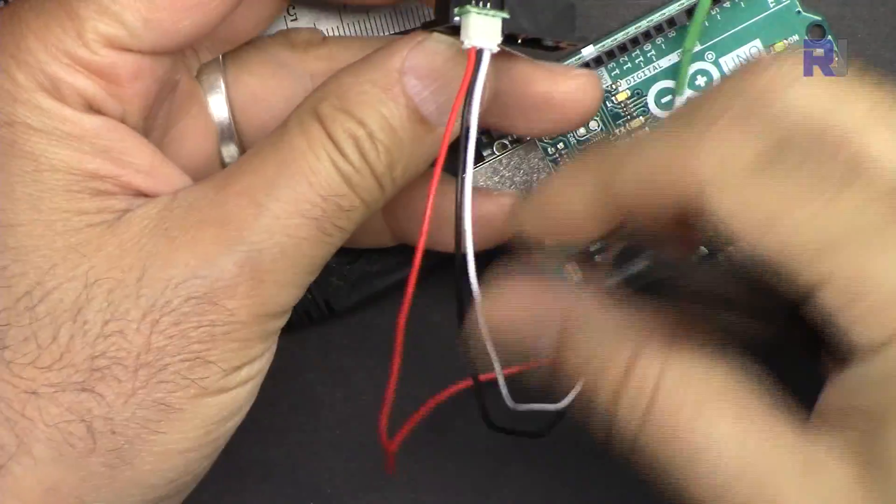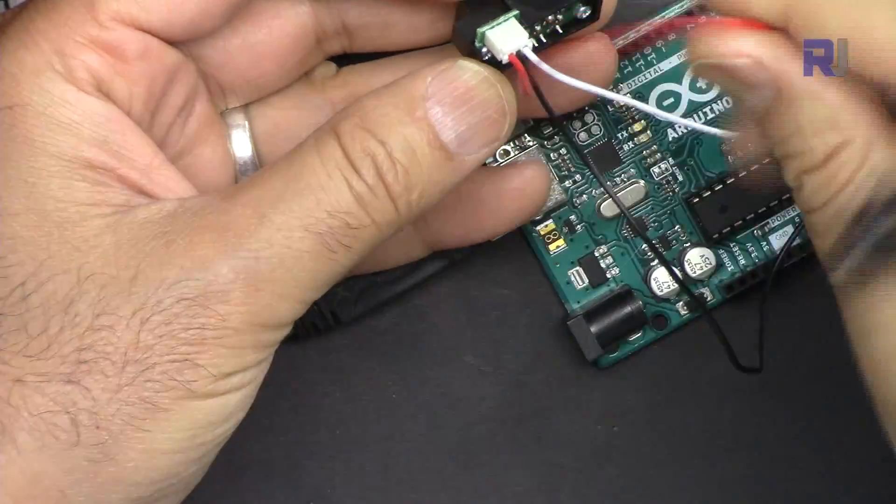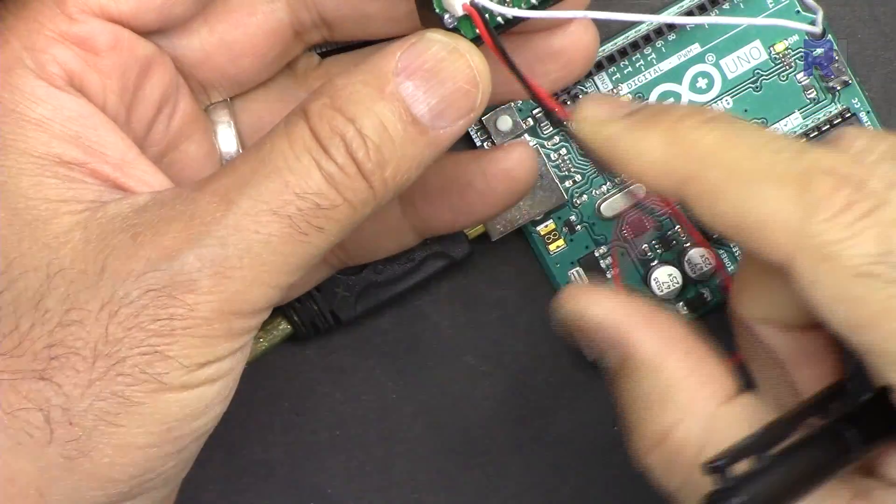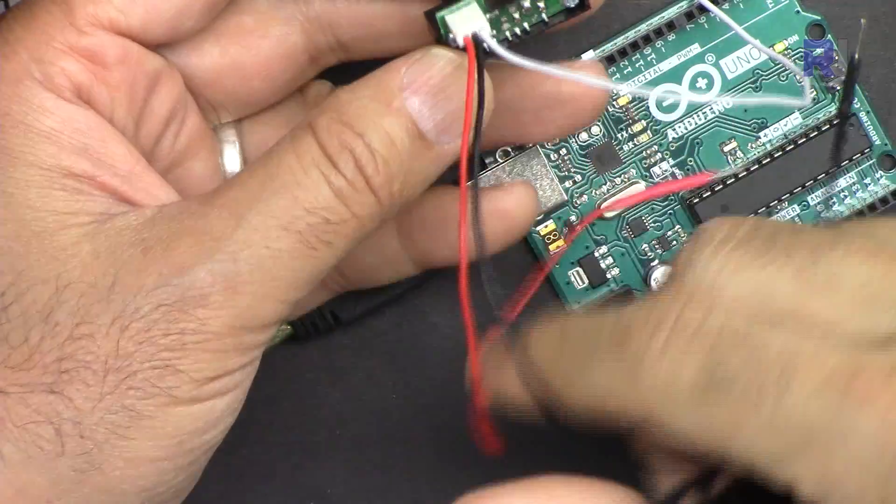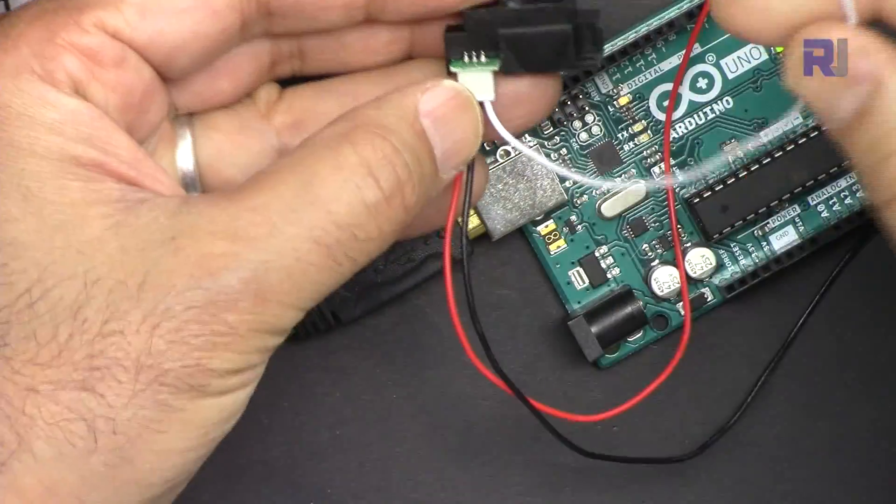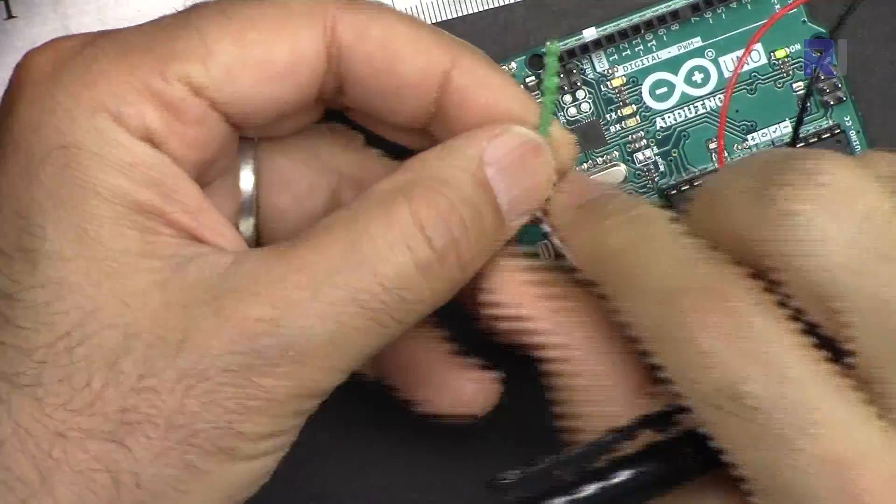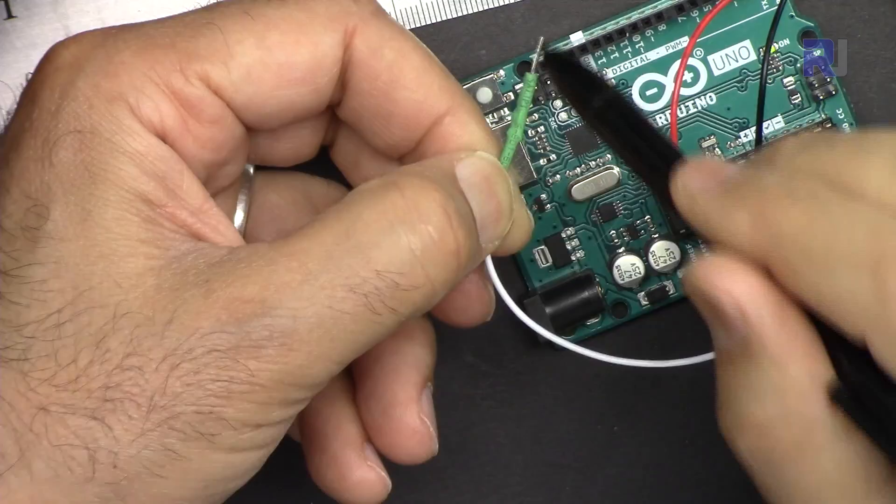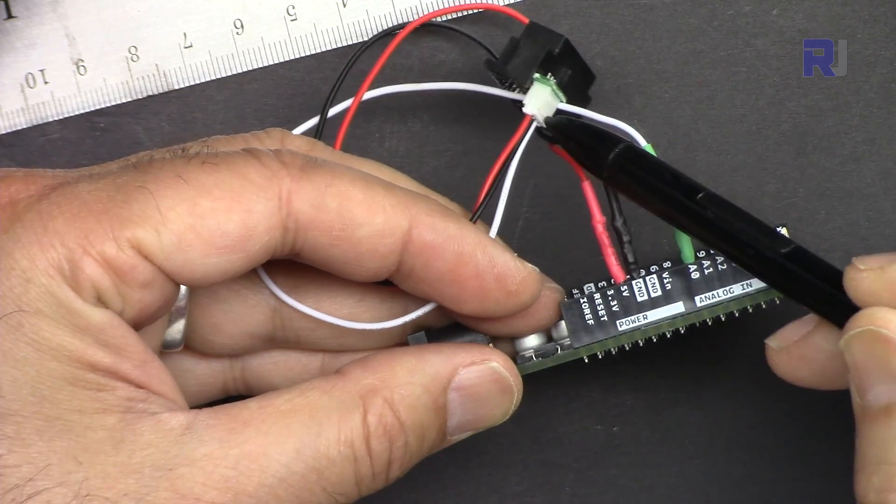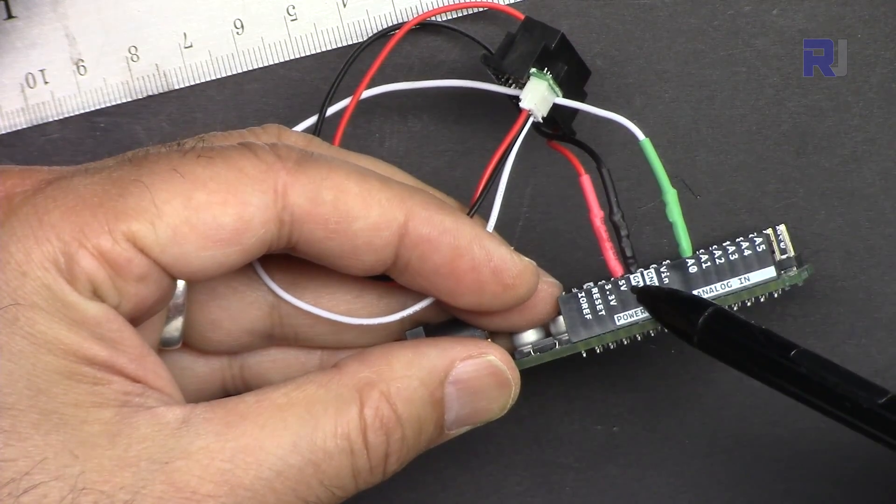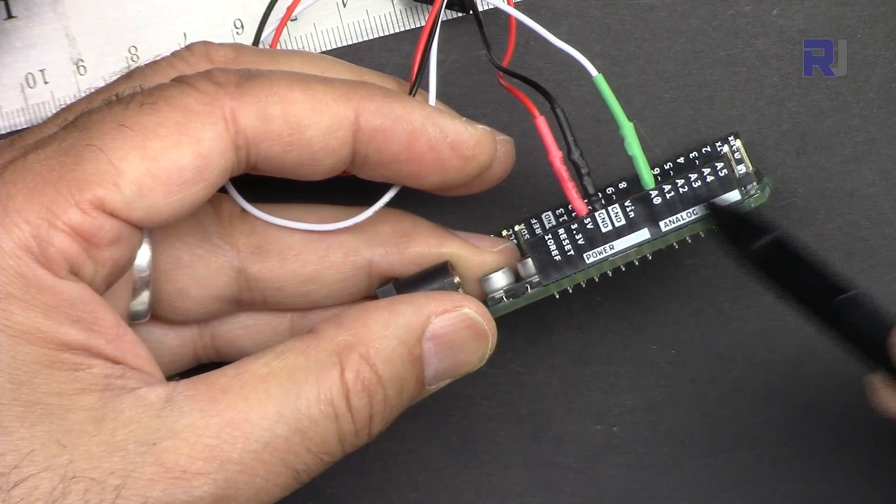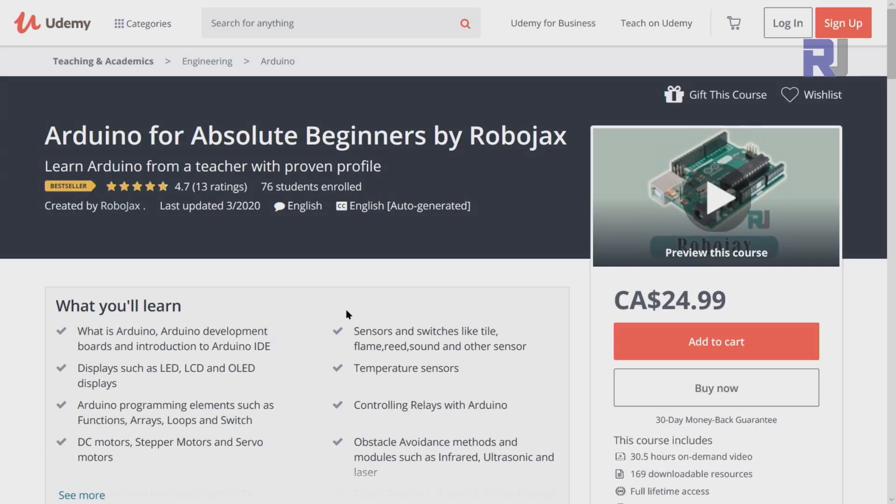Now let me explain the wiring. We have three wires: red connected to 5 volts, black connected to ground - fortunately they follow the convention - and the signal wire which is the voltage output. The red is connected to 5 volts, black to ground, and the white is connected to analog pin 0. Of course you can select any other analog pin that you want.